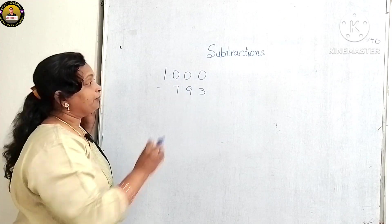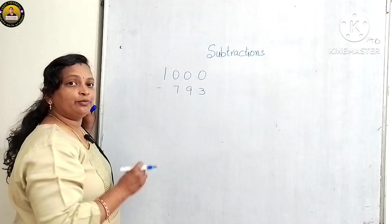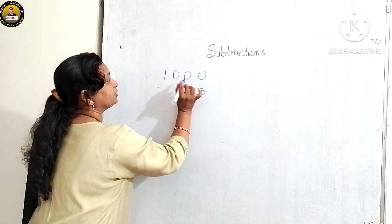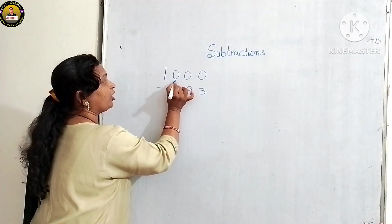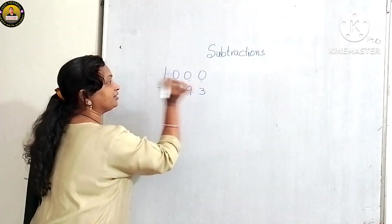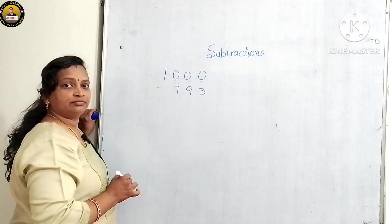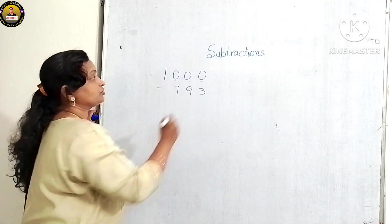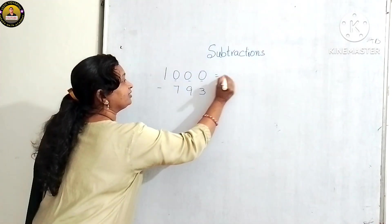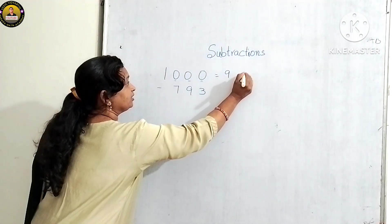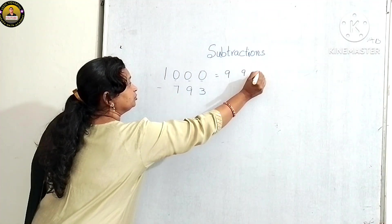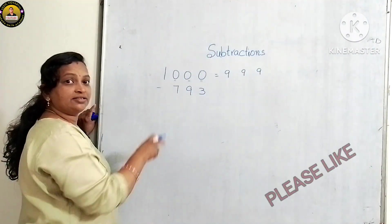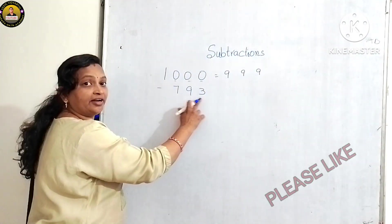But today with this method we can do it easily. First of all, check how many zeros are there. In 1000, there are three zeros, so just take three nines: 1, 2, 3.